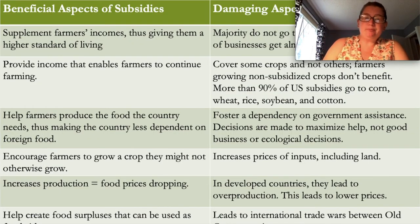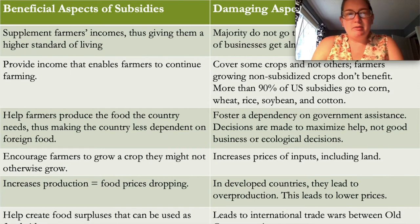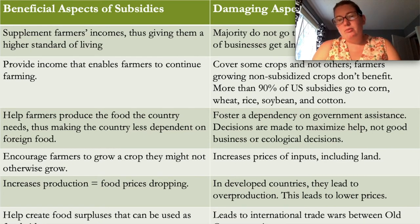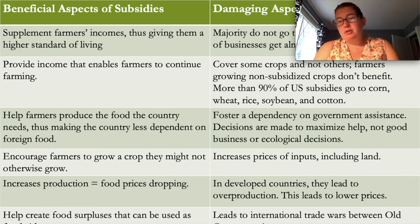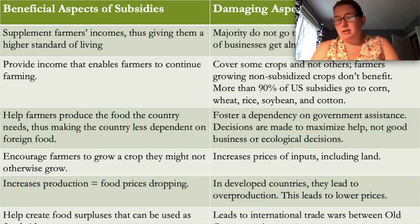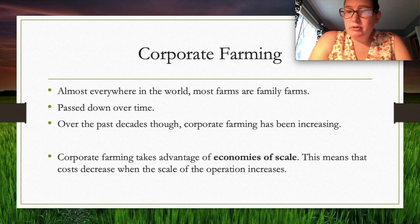Subsidies can supplement farmers' incomes, giving them a higher standard of living, enabling them to continue farming, and helping create surplus food. On the downside, subsidies can cover some crops but not others, meaning farmers growing non-subsidized crops don't benefit. They can also foster dependency on government, increase input costs, and lead to overproduction in developed countries — causing low prices and international trade conflicts between old core countries.